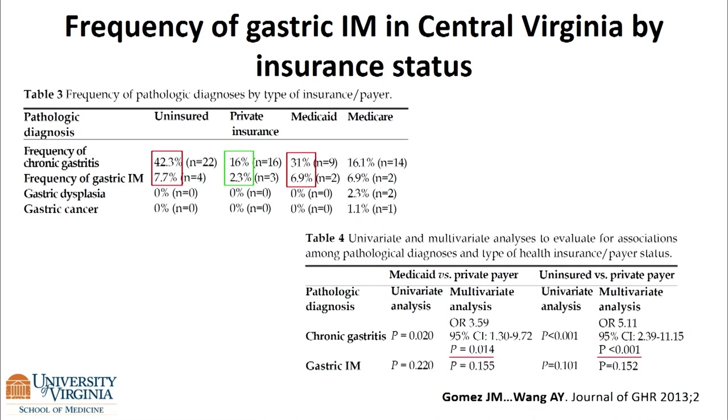Early on, we looked at a swath of patients from Virginia. Central Virginia is about 70% Caucasian, 18% African American, and 7% Asian American. The gastric IM prevalence was about 5%. From Rob's work, it's as high as 12% in parts of the U.S. Family history showed a strong association with gastric IM. We also found that in our mainly Caucasian American population, the underinsured or uninsured and those on Medicaid had a higher frequency of chronic gastritis than IM.